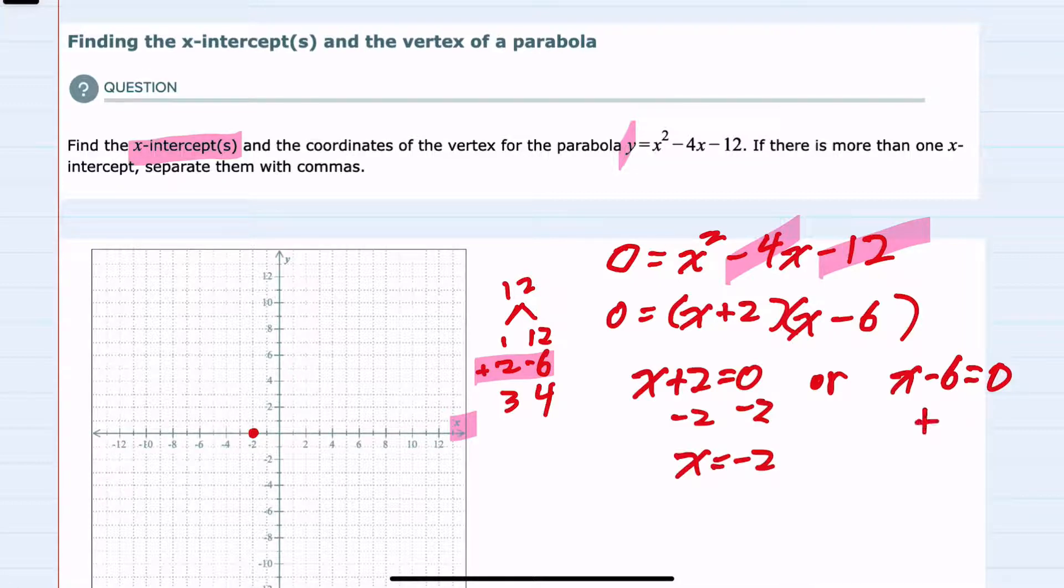From the second, when I add the 6 over to isolate the x, I get x equals 6 as the second x-intercept. So our two x-intercepts are negative 2 and 6.